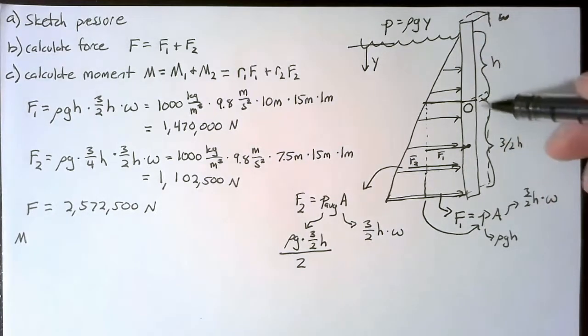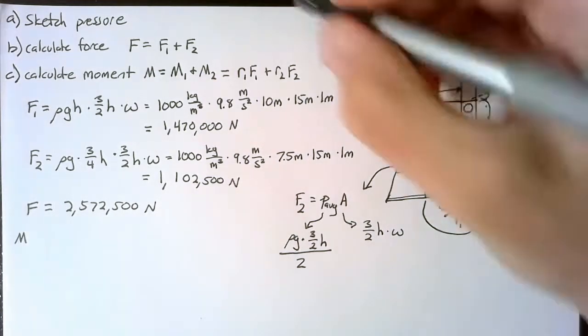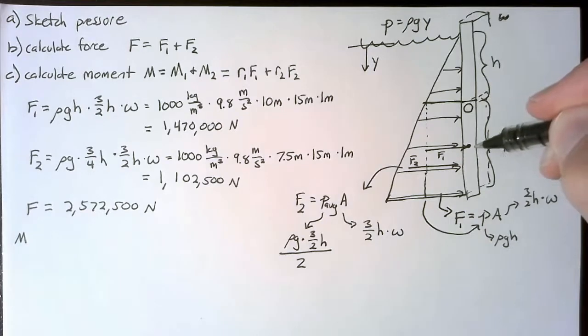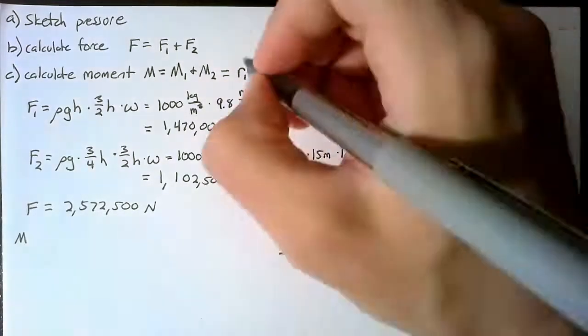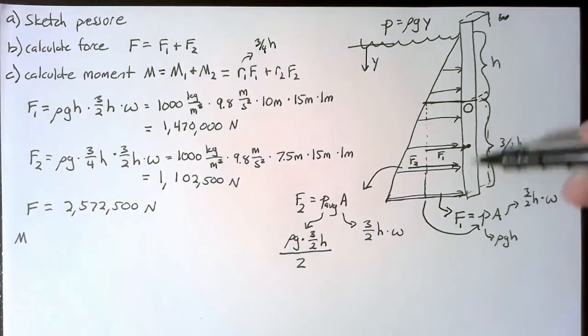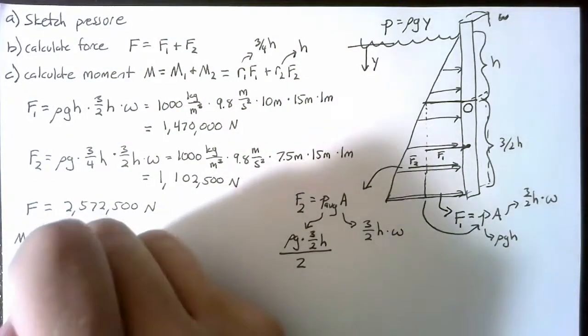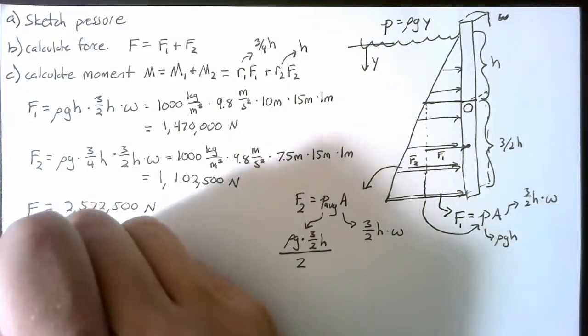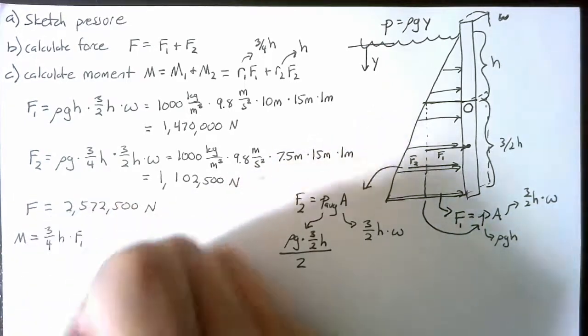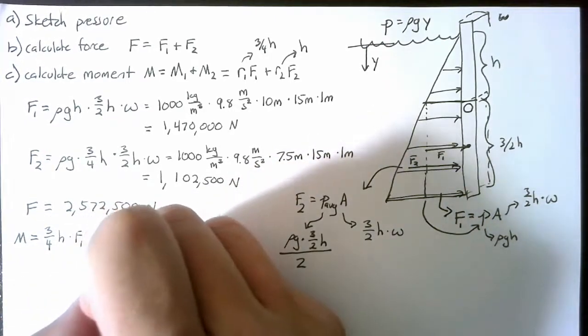So R1, the distance to F1, is going to be 3 quarters h. The equivalent load is exactly in the center of the panel. R2 occurs two thirds the way down. And so we just write this as h. So our M is equal to 3 quarters h times F1 plus h times F2.